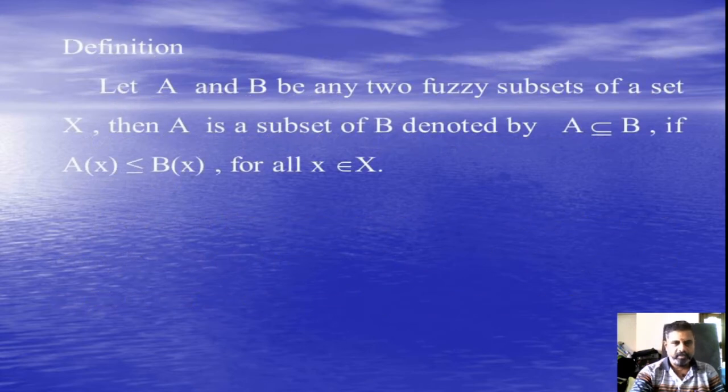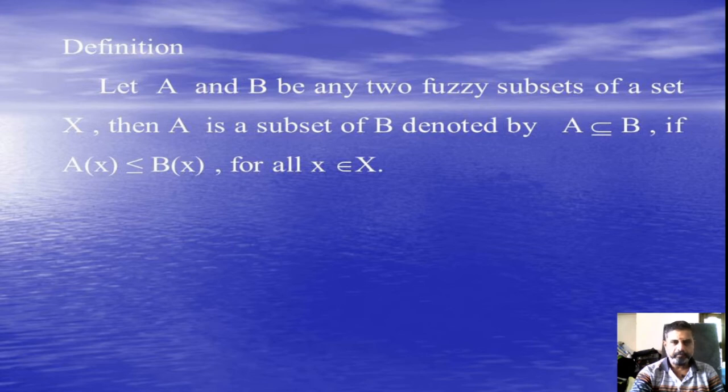Next one, subset operation, Fuzzy Subset operation. Let A and B be any two Fuzzy Subsets of a set X. Then A is a subset of B denoted by A ⊆ B if and only if A(x) ≤ B(x) for all x belongs to X.